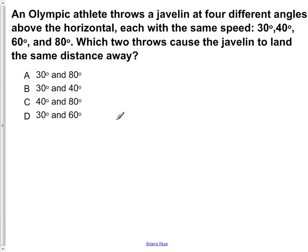An Olympic athlete throws a javelin at four different angles above the horizontal, each with the same speed: 30 degrees, 40 degrees, 60 degrees, and 80 degrees. Which two throws cause the javelin to land the same distance away?